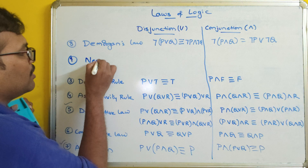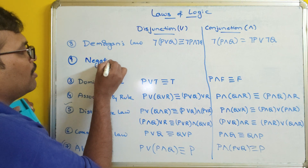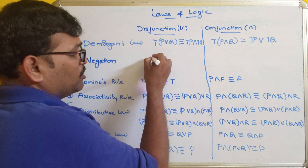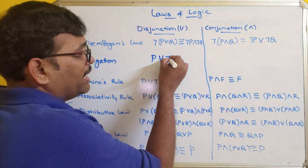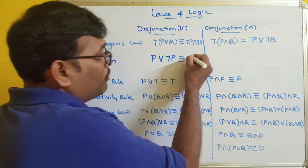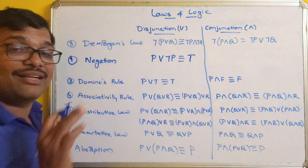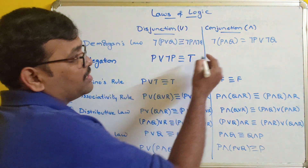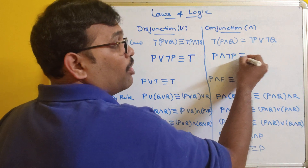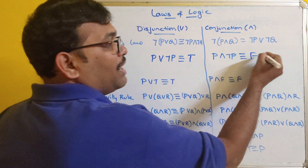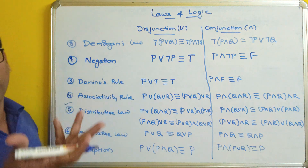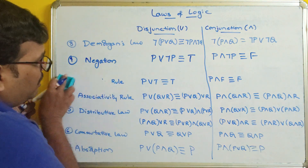The ninth law is the negation law. p∨¬p always gives true as a result, and p∧¬p always gives false as a result. You can verify this by constructing a truth table.